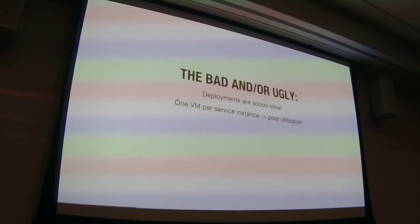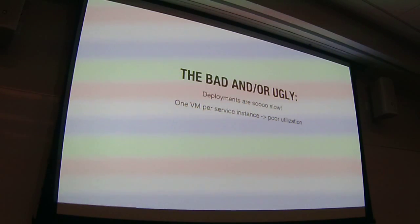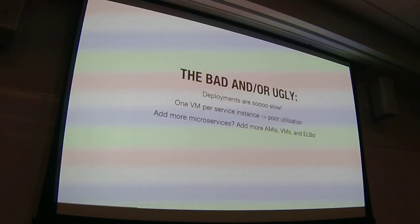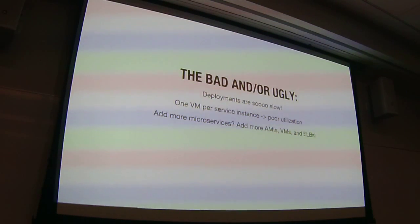Particularly if a given service is lightly loaded, you'll start scaling it down. In the AWS environment you want to be deployed across three availability zones for redundancy, so you've got five or six services each with three VMs at low load because you want them for redundancy, but they're all lightly loaded — really poor utilization. If you want to add more services, which we were doing increasingly as we pulled pieces out of that giant monolith, you're going to start adding more AMIs, more VMs, more ELBs. And my small ops team had to do all that extra work.